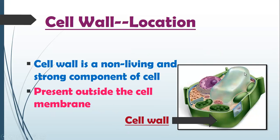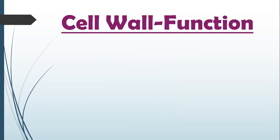Here is another figure. The cell wall is the outermost covering in plants, prokaryotes, and fungi. Cell membrane is also present inside them, but cell wall is the outermost layer. Cell membrane is present inside the cell wall, but in animals, cell wall is not present.